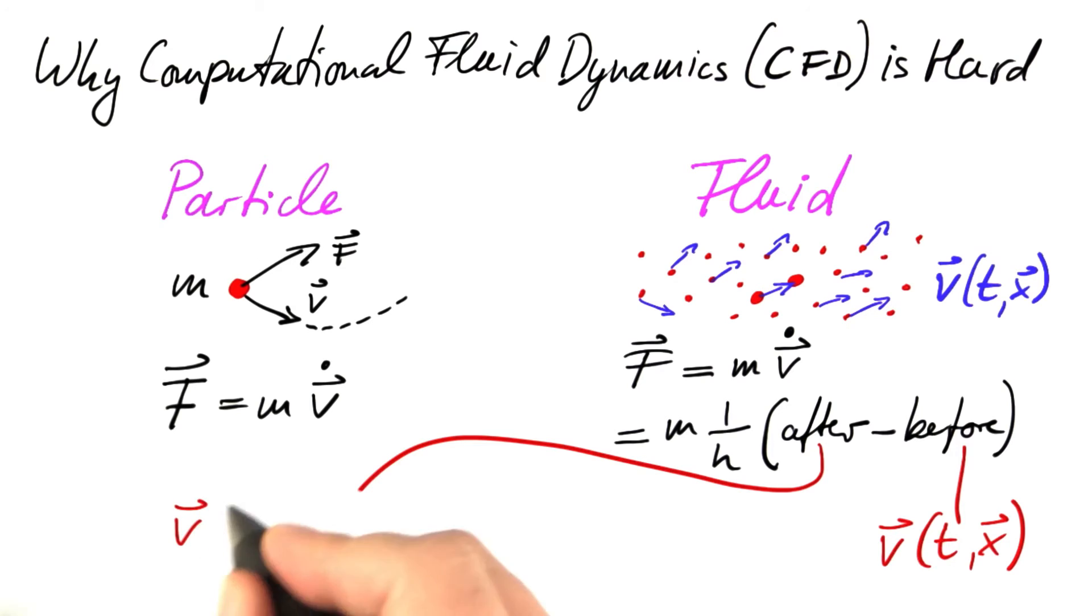The tricky thing is the after part. It's the velocity field at the later time, t plus time step. And now we have to take care of the fact that our particle has moved a little. We don't need the velocity field at that later time at position x. It has to be a slightly different position. Namely, how far did we advance?